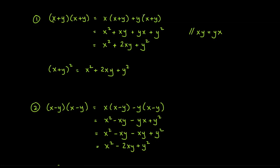Instead of multiplying this out every single time, we have a shortcut. The recipe: take the first term before the plus sign, square it — that becomes the first term of your answer.